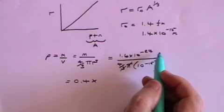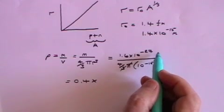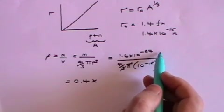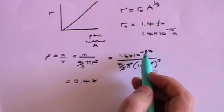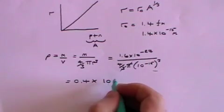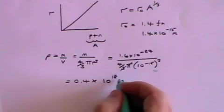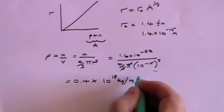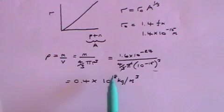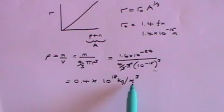If you bring that on the top it becomes 10 to the plus 45, and if you multiply 10 to the plus 45 by 10 to the minus 27 you get 10 to the 18 kilograms per meter cubed. 10 to the 18 kilograms is a massive amount in one cubic meter, and that's why nuclear material is so dense.